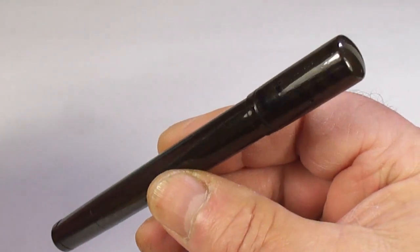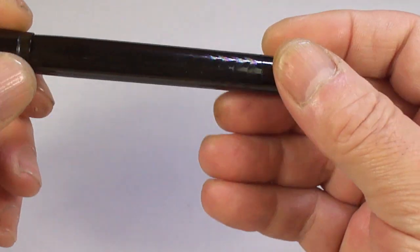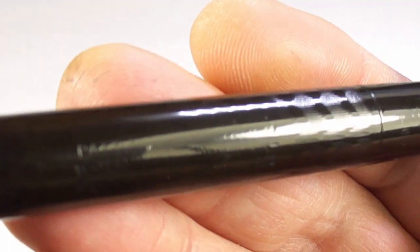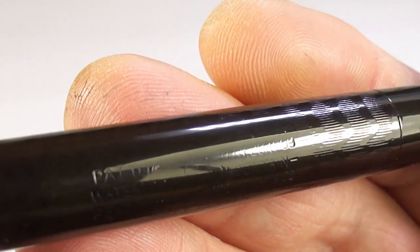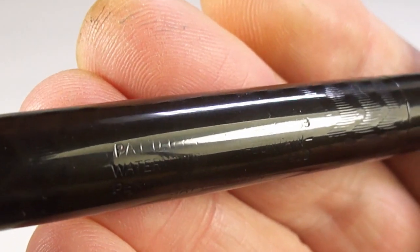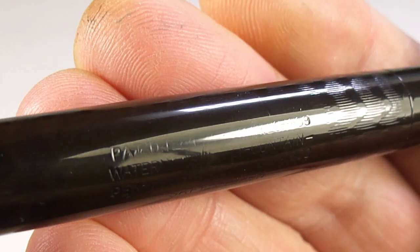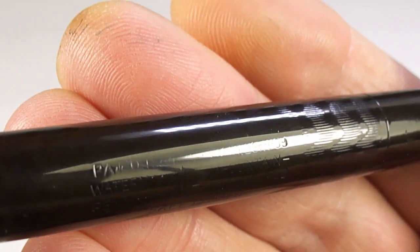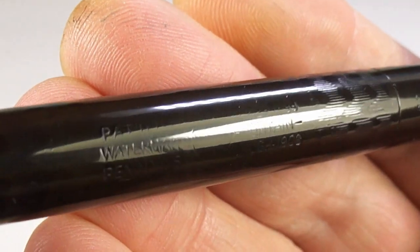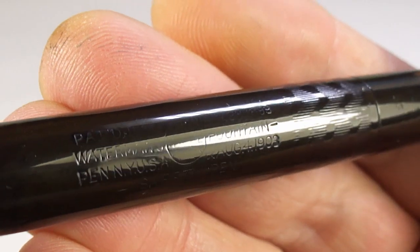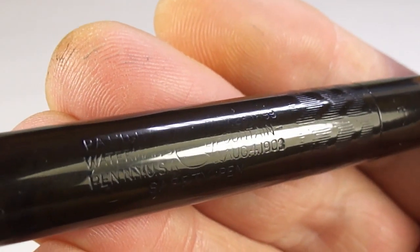First of all, let's take you to the barrel imprint. Some of it is a little bit worn, but I'm hoping you can see some of it. To the very top it has patent dates which are a little bit worn. Just below that it has Waterman, and then to the center it's got the circle for the Ideal, and then to the right Fountain Pen.